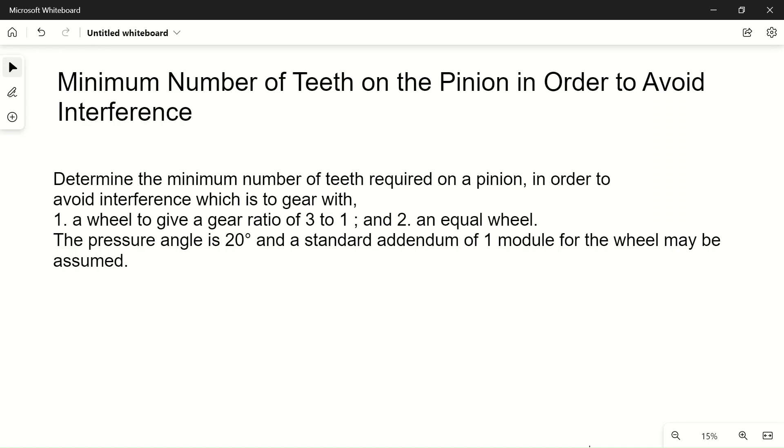Determine the minimum number of teeth required on a pinion in order to avoid interference which is to gear with. First case: a wheel to give a gear ratio of 3 to 1. Second case: an equal wheel.